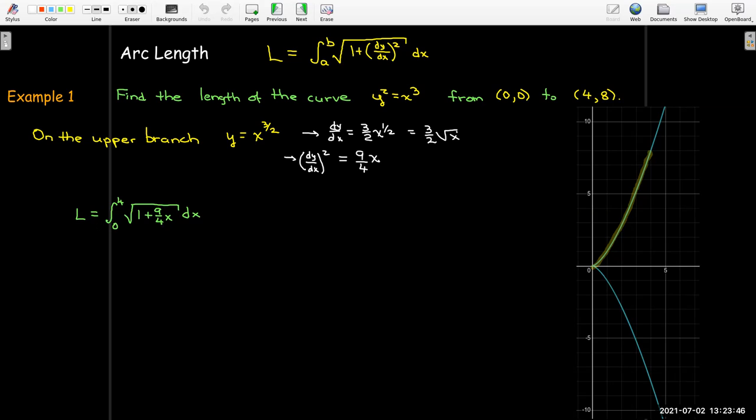And so I need to find the antiderivative of radical 1 plus 9/4 x dx. I can do that with a u substitution and go ahead and change my bounds, and then calculate the antiderivative when I write the integral in terms of u and perform the evaluation carefully. So I get 8/27 (10√10 - 1).